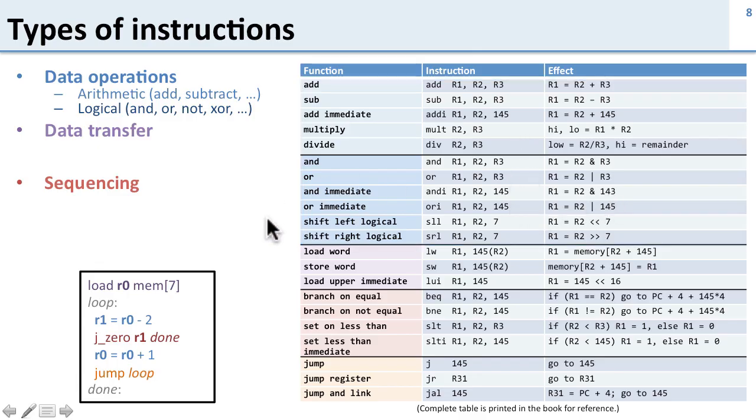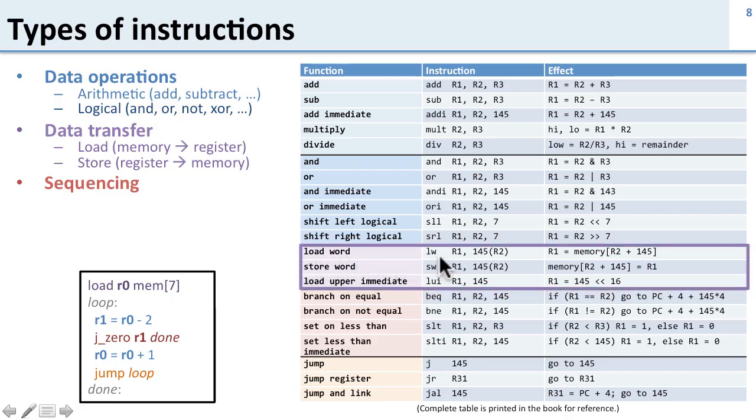The next set to look at is data transfer. So these are for loading data from the memory into the register file or storing it from the register file back into memory. And we have several of these. So load word. Here's the load word instruction. And it takes one register here which is going to be the destination. So we're loading from memory into this destination. And then one register here which is the source address and an offset. And we can see what this instruction does. It's going to put into that register the data that was at memory location pointed to by the second register plus this offset. So add the two of these together and load that location.